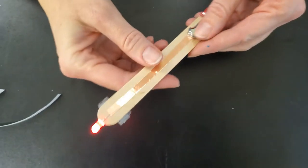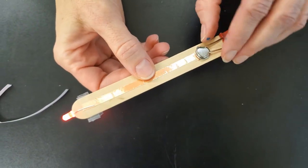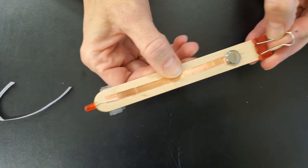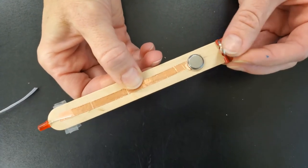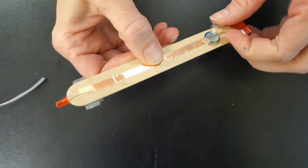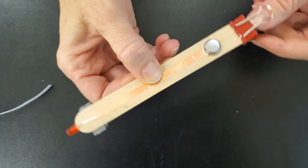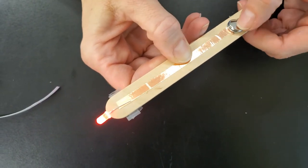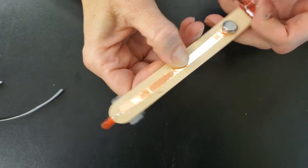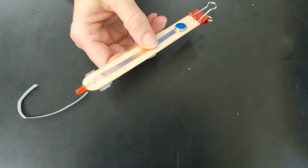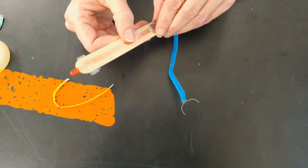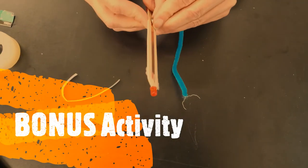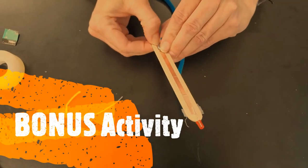Make sure that when you're not using it that you flip the binder clip up so you're not draining the battery. Also make sure you're not using this in the middle of the night to read a book like I used to do when I was a kid. Now I wanted to show you an extension activity that you could do with your battery and your light bulb.